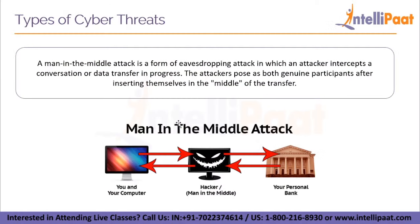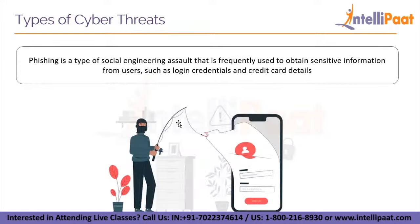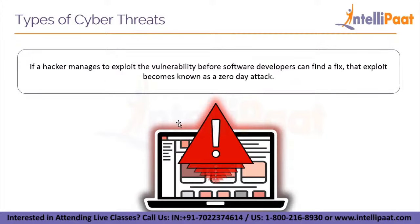In a man in the middle attack, the attackers pose as both genuine participants after inserting themselves in the middle of the transfer — they get in between you and whoever you're communicating with. Phishing is a type of social engineering assault frequently used to obtain sensitive information such as login credentials and credit card details. Attackers code an entire UI page that looks exactly like a bank's or e-commerce page, so when you enter your credentials they gain access and may transfer funds. Finally, if a hacker manages to exploit a vulnerability before software developers can find and fix it, that exploit becomes known as a zero-day attack.